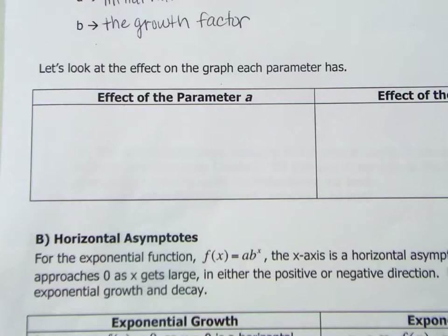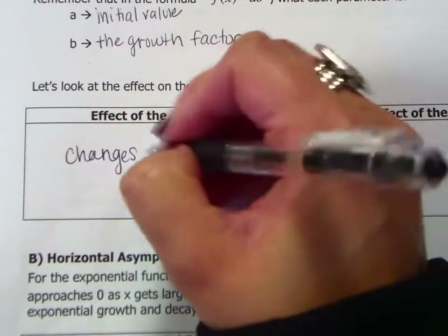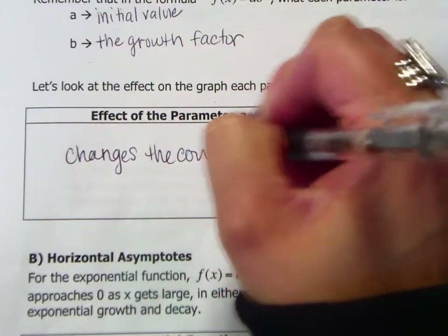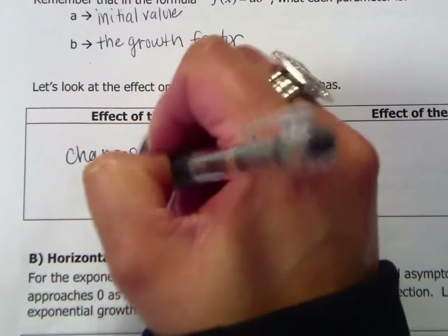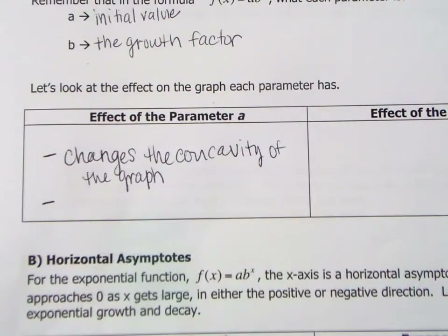Mike, what happens when we change that value of A in terms of the graph? It changes the concavity of the graph — it does, actually. For what values of A is your graph concave up? And when A is less than zero, your graph is concave down. Doesn't it also change the steepness of your concavity?